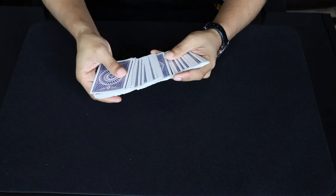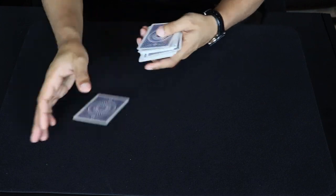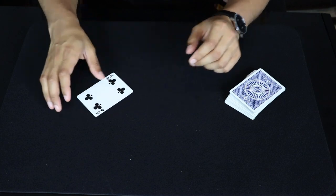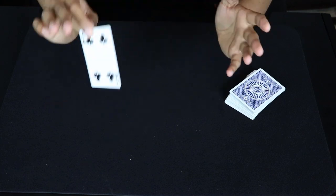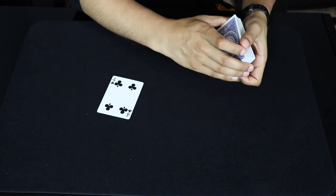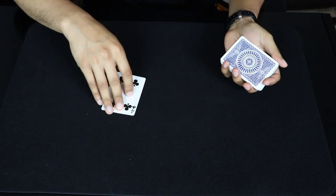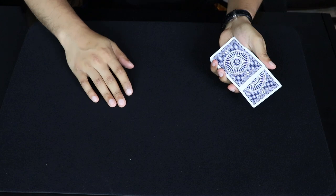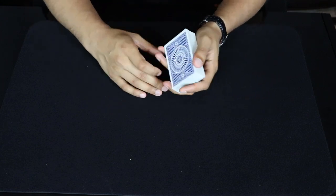Alright, now check this out. We'll start off by having a card selected by the spectator. Let's just say it's this card, the four of clubs. Once the spectator takes a look at the card and remembers it, we'll have the spectator call out stop as I ruffle through the deck, and we'll place the card right there. Let's just say stop here, we'll put the card right in there and push that in.